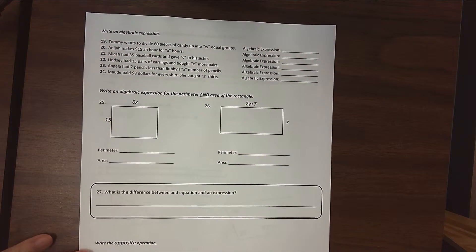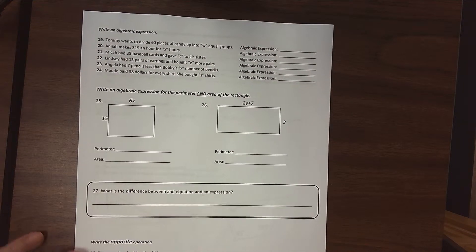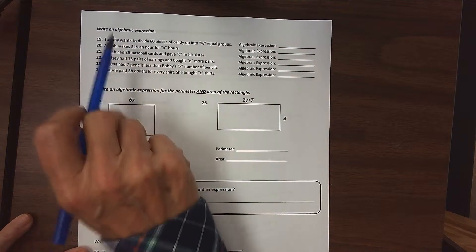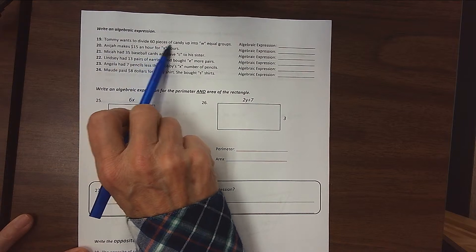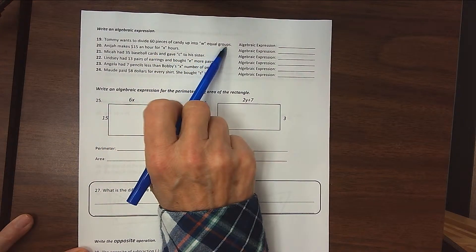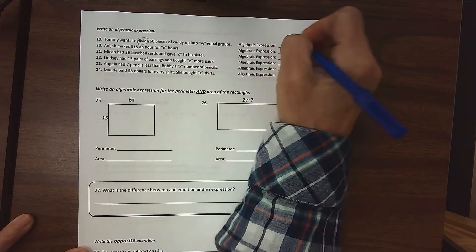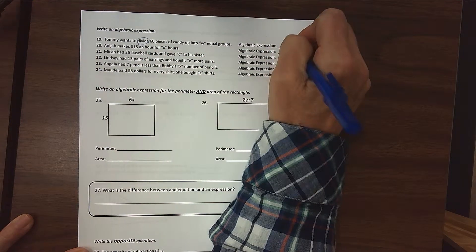All right, so here's page two of our unit one, part two, study guide. This says write an algebraic expression. Tommy wants to divide 60 pieces of candy up into W groups, so we're going to take 60 divided by W.